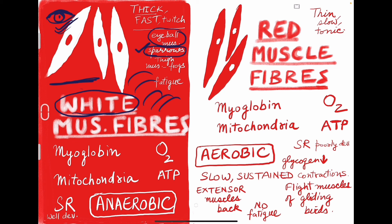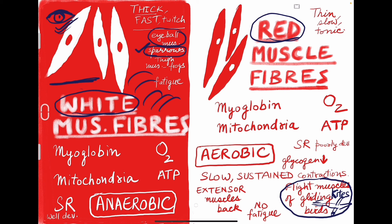Red muscle fibers are found in the flight muscles of gliding birds such as kites, which soar for long durations with wings spread, undergoing slow sustained contractions. Another example is the extensor muscles of the back, which are also continuously contracted and represent red muscle fiber activity.